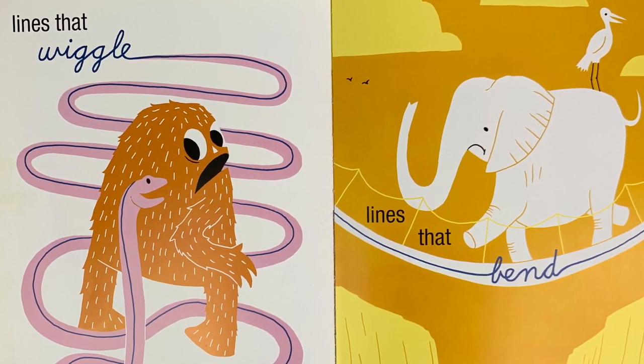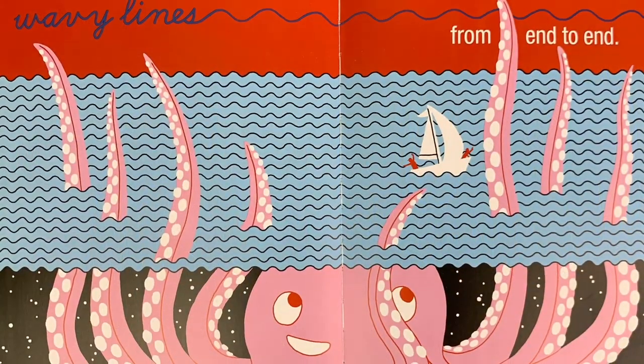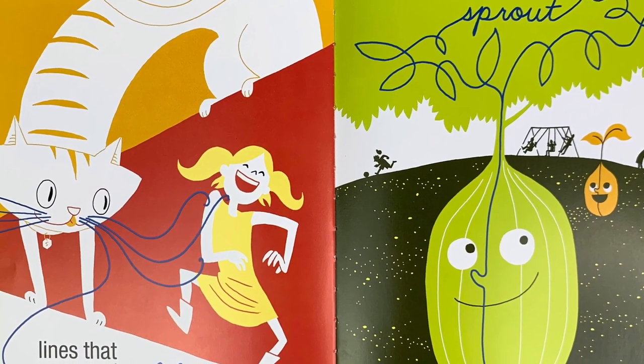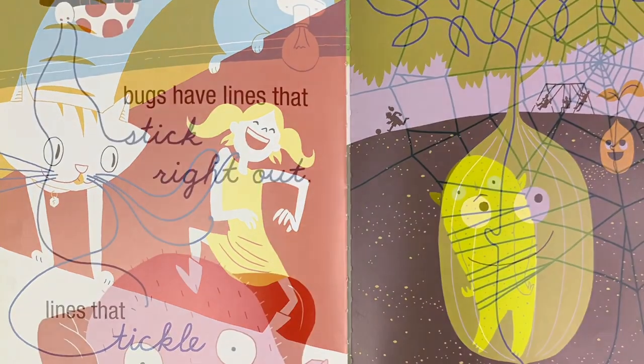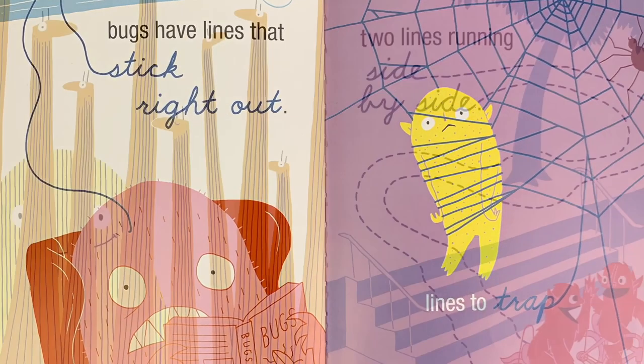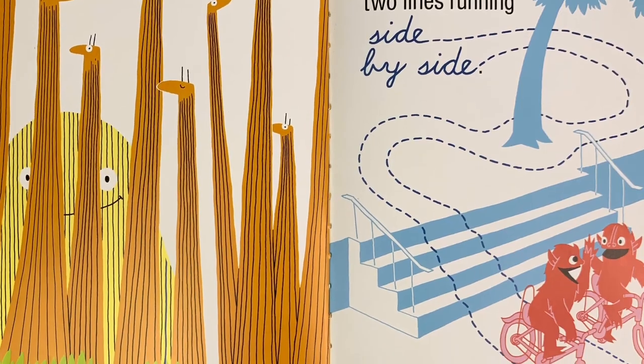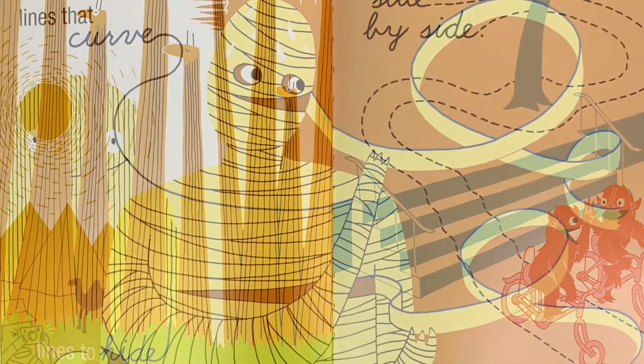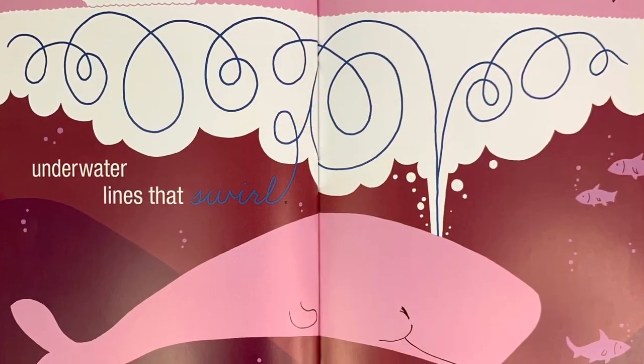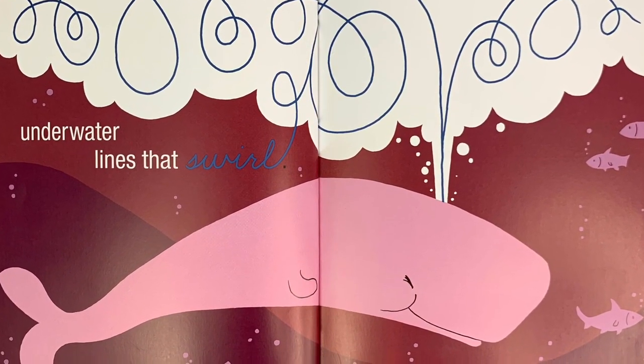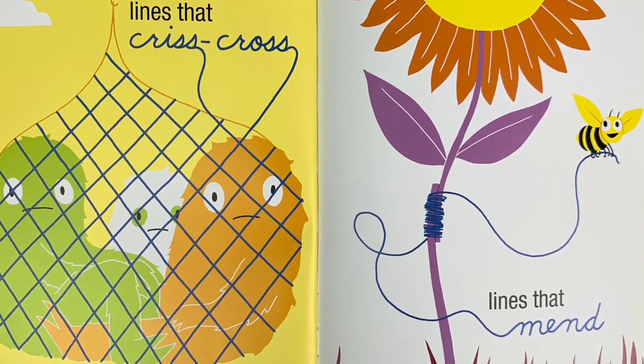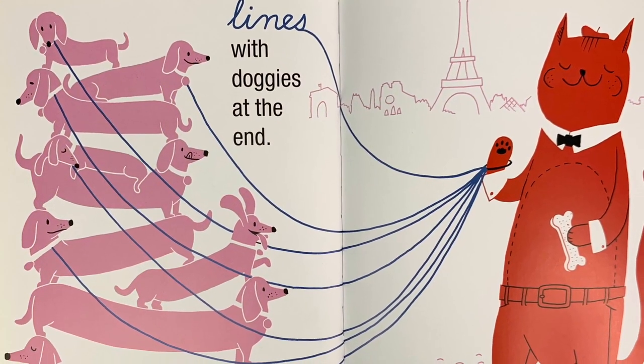Lines That Wiggle by Candace Whitman, illustrations by Steve Wilson. Lines that wiggle, lines that bend. Wavy lines from end to end. Lines that tickle, lines that sprout. Bugs have lines that stick right out. Lines to trap. Lines to hide. Two lines running side by side.